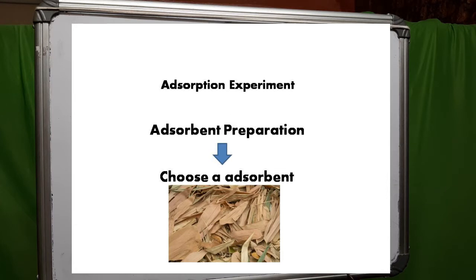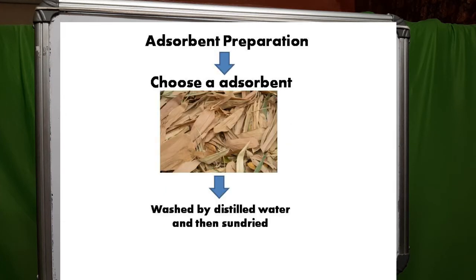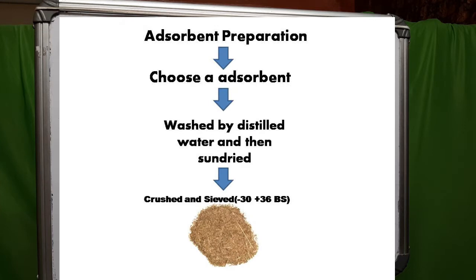The leaves were collected from the nearest area. They were washed with distilled water to remove dirt and mud, and then dried in sunlight. The dry leaves were then crushed and sieved to the desired particle size — here, minus 32 plus 36 BSH mesh.